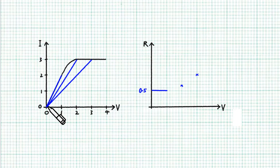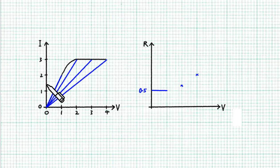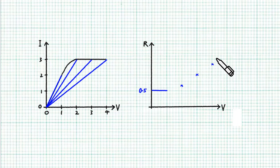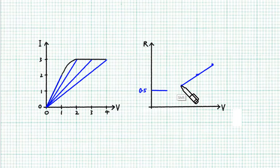And lastly, at this point here we have 3 divided by 3, that's 1 unit of resistance. And at this point, we have 4 units of V divided by 3 units of I, that's 1.33 — so 1.33, somewhere here. These three points seem to line up pretty straight, so I'm going to join them up with a straight line. As for this part, I'm going to join them up with a smooth curve.